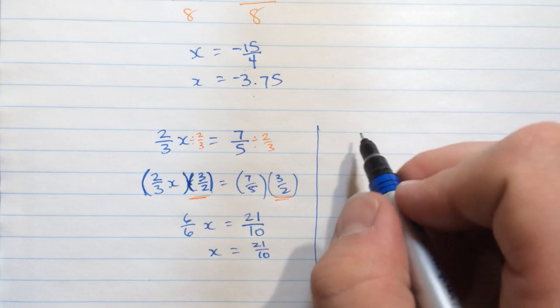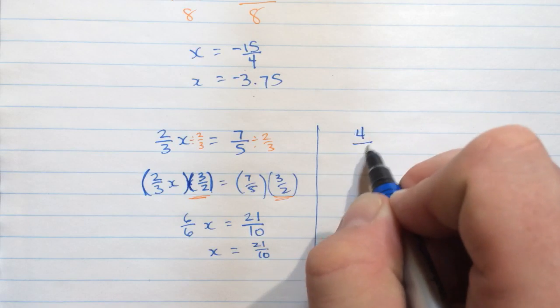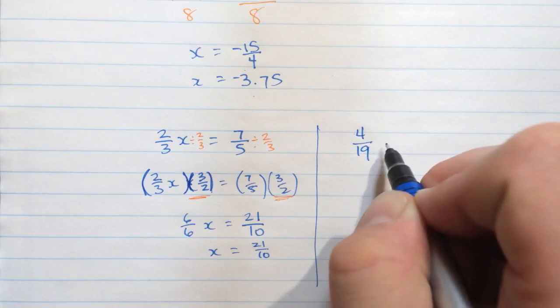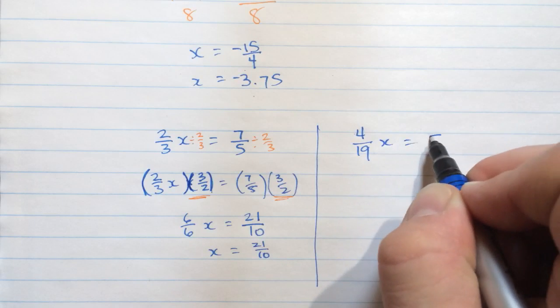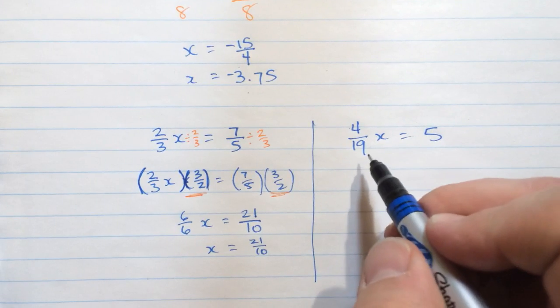we ended up down here just multiplying by the reciprocal, and that's the same thing. That'll give us the same effect. So if you have any fraction, like 4 over 19 times x equals 5, let's say,